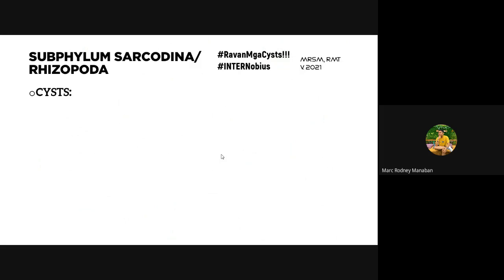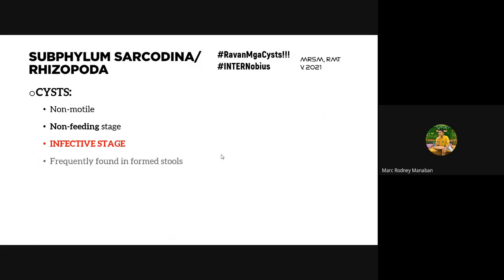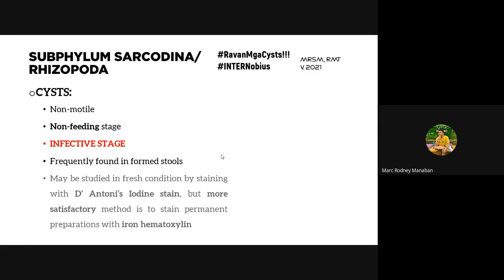Looking at morphology: cysts are non-motile, non-feeding, but serve as the infective stage. They are frequently found in formed stools because that environment is less conducive for trophozoites, triggering encystation. They can be visualized using D'Antoni's iodine stain in a direct fecal smear, which is primarily used for visualization of cysts. Note: iodine kills trophozoites, so they won't be visible with iodine staining.